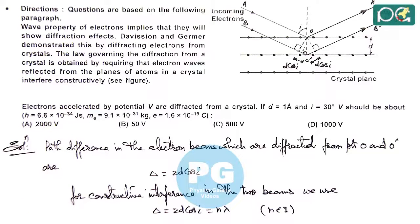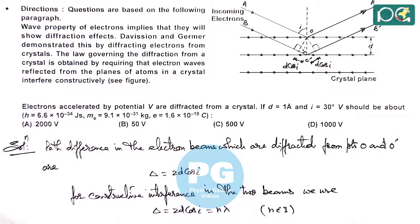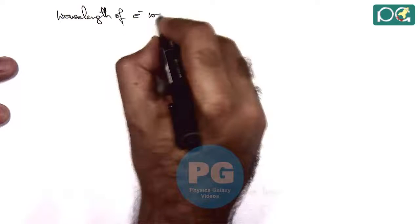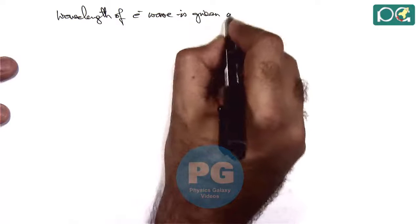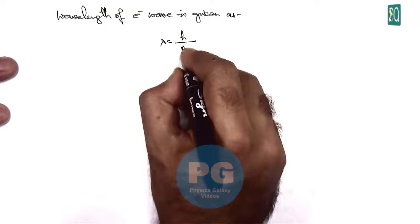Now when we talk about the wavelength of the electron beam, that can be obtained by de Broglie's hypothesis. So we can write wavelength of electron wave is given as lambda equals H over momentum as MV.